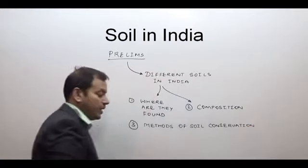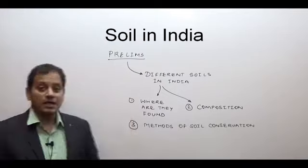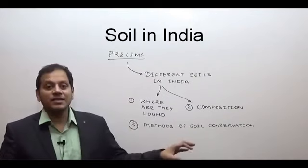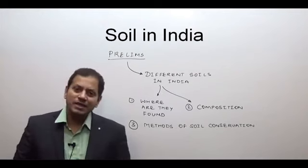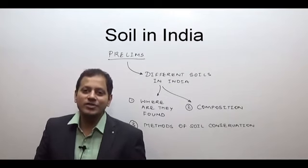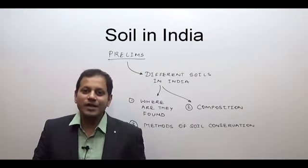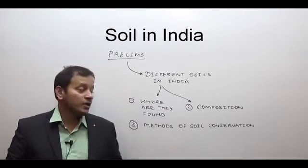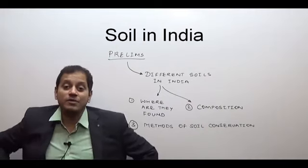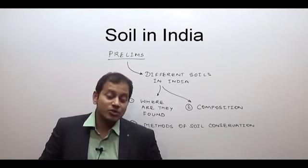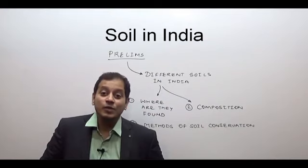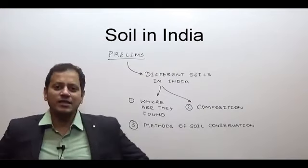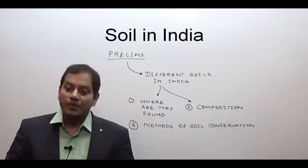In the preliminary examination, focus on: where soils are found (conceptual), their composition (somewhat factual — for example, Indian soil is generally poor in nitrogen, so India is the largest importer of urea, and the government gives subsidy for it), and methods of soil conservation (factual data). Some soils are rich in humus, some are poor, and you will need to apply a little geomorphology to understand this.